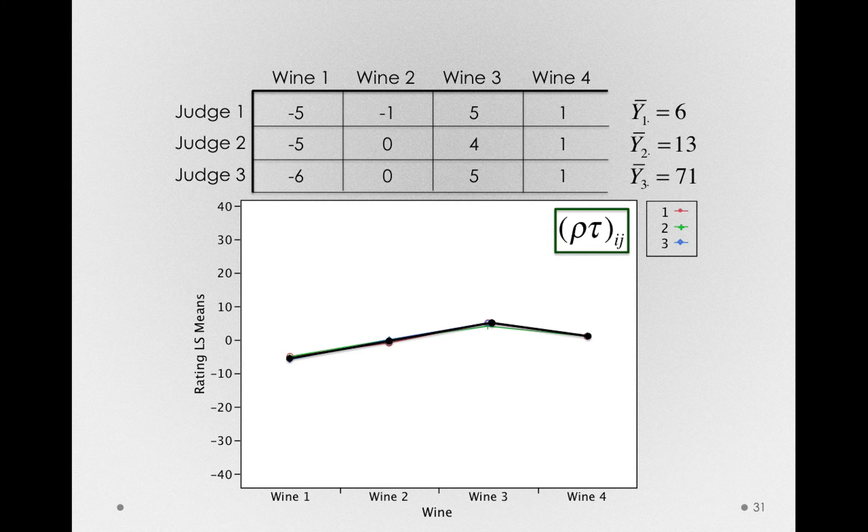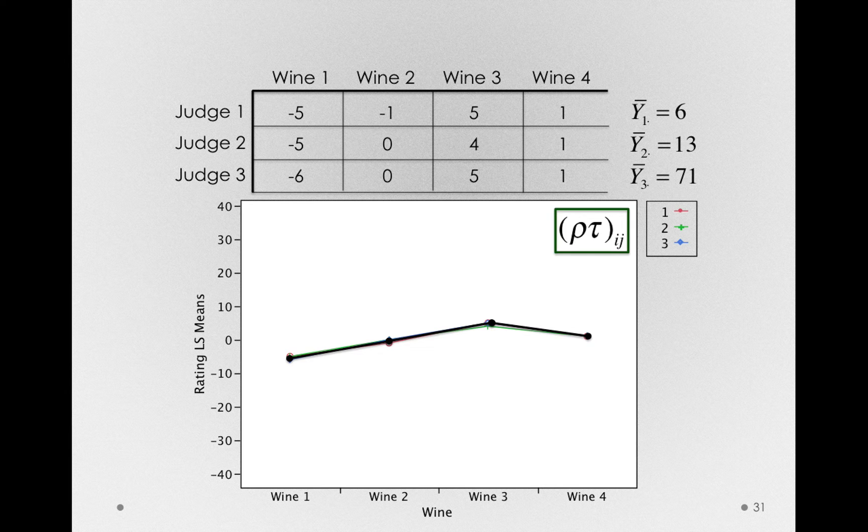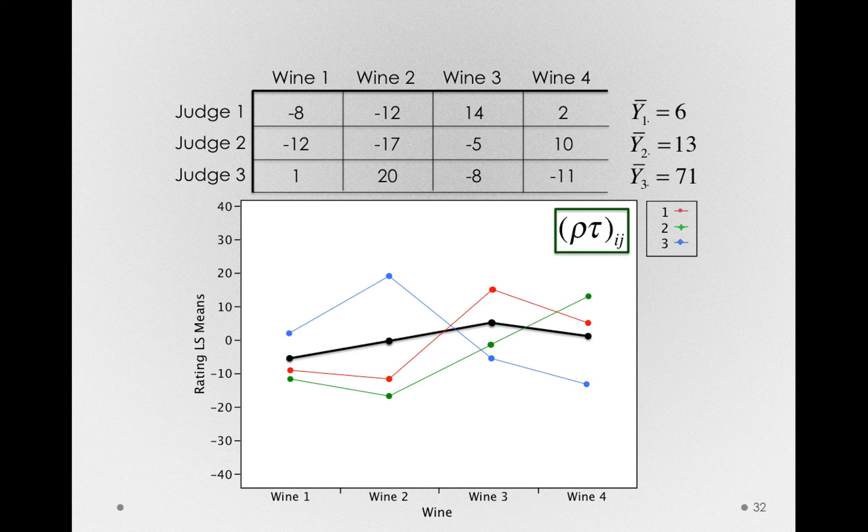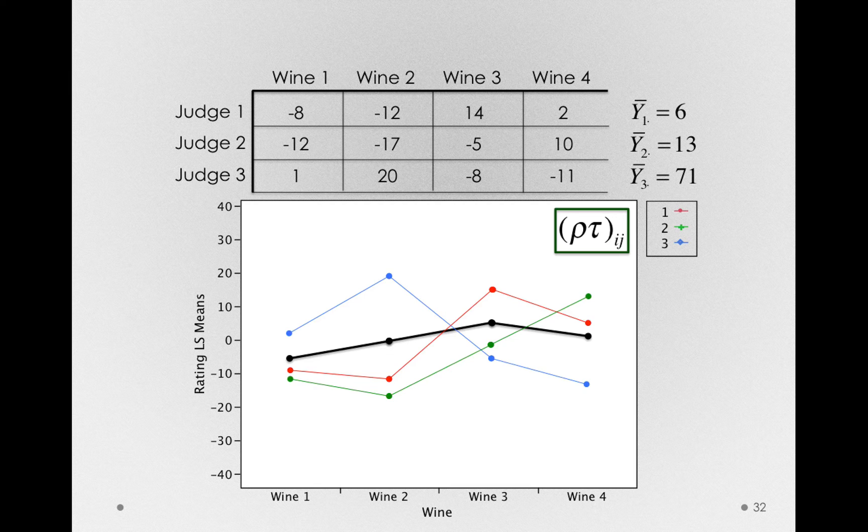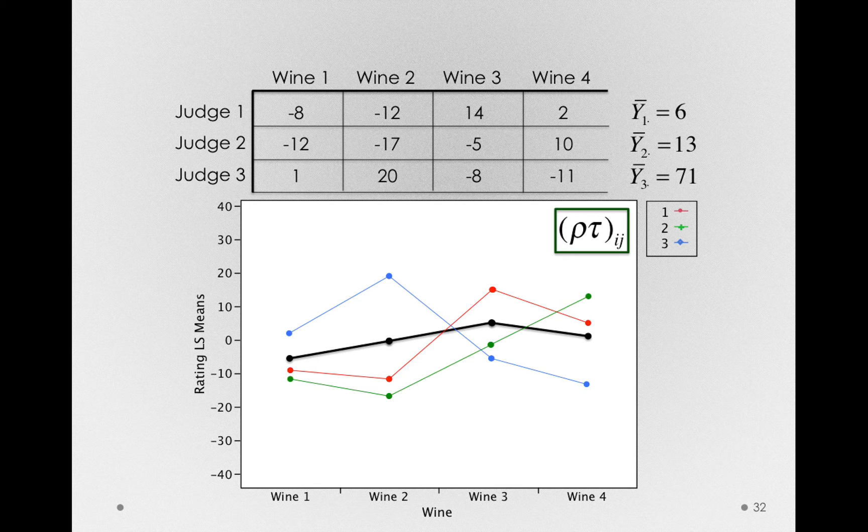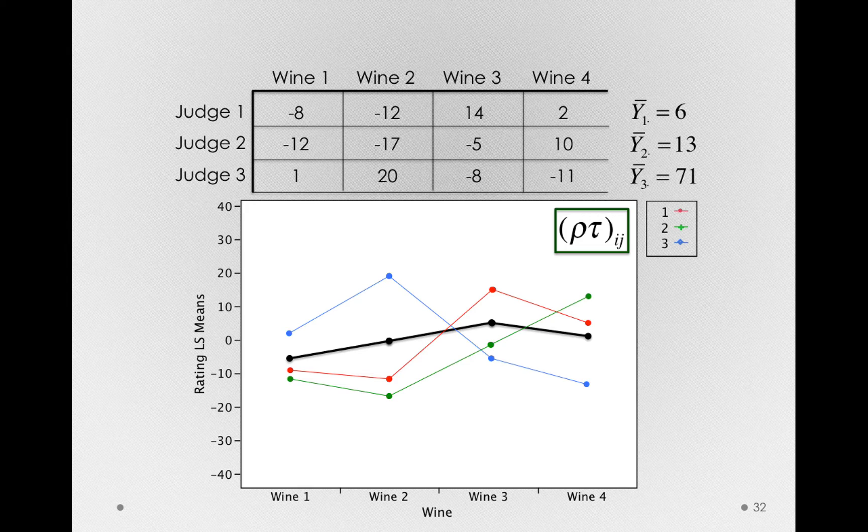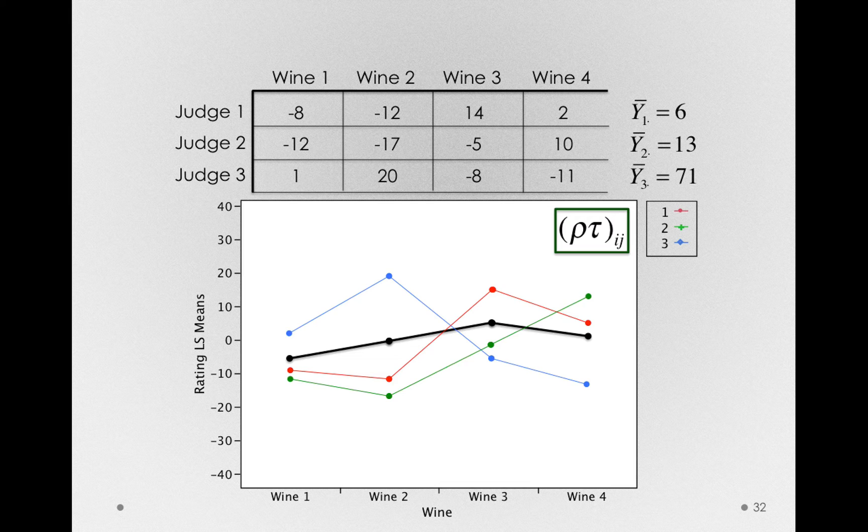Because notice, if there was a large subject-by-treatment interaction, something like this, where subjects differed quite variably in how they rated the wines, this would give us no indication that this is a stable effect. That would make us feel that judges are all over the place in how they rate these wines, whether or not there's some average difference between the wines.